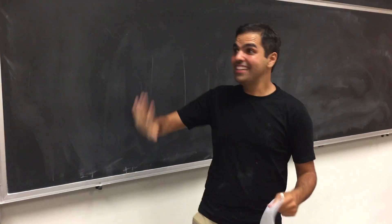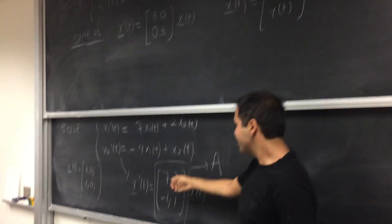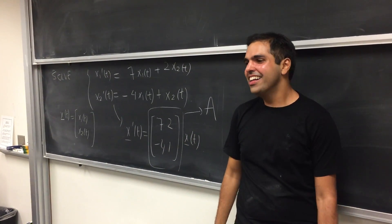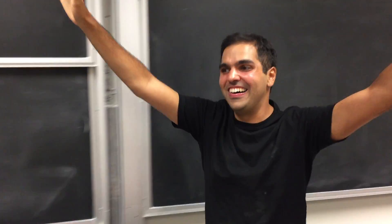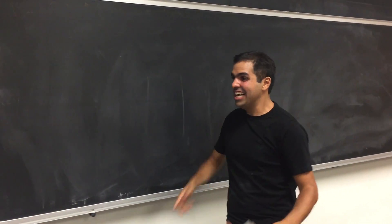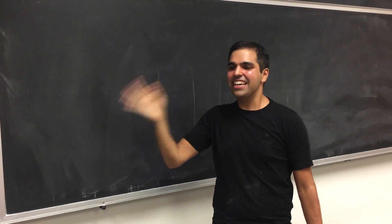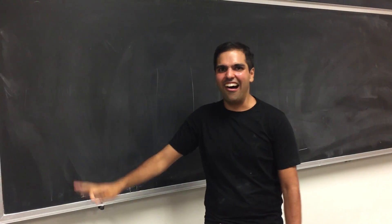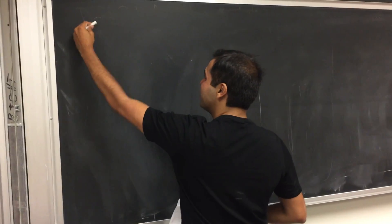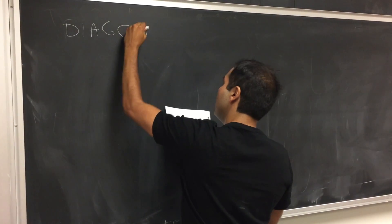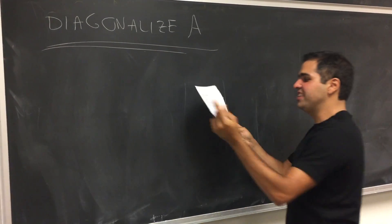Remember, systems with diagonal matrices are easy to solve, but this system is hard to solve — if only A were a diagonal matrix. But here's where linear algebra kicks in, because it turns out that in most cases it is actually easy to turn a matrix into a diagonal matrix. It's called — drum roll — diagonalization. Let me show you the theory first, and then we'll see how to apply it to this problem by diagonalizing A.